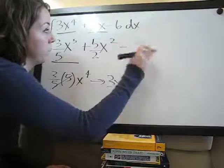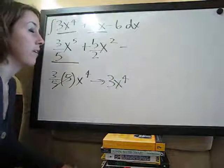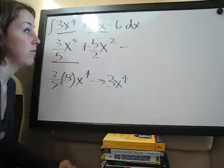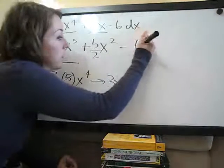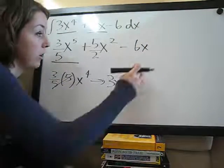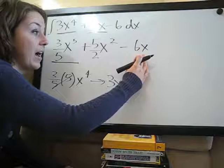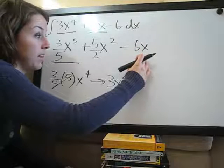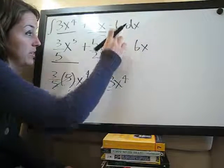And then, finally, 6, the antiderivative or integral of 6 is 6x, because, again, we know if we took the derivative of 6x, we would just get 6, which is what's up here.